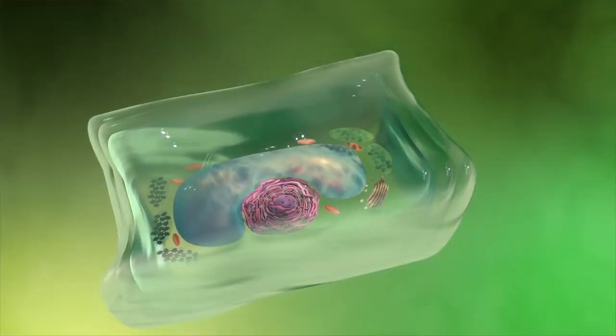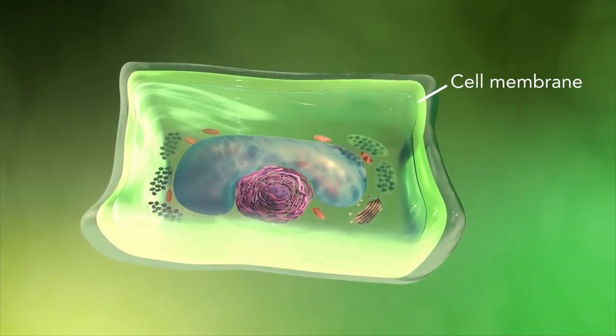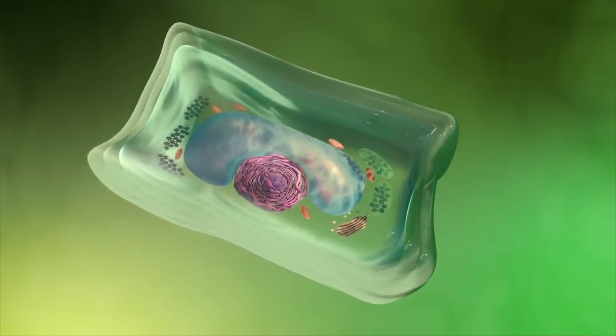Plant cells also have a cell wall outside of their cell membranes that shape, support, and protect the plant cell. Animal cells never have a cell wall.